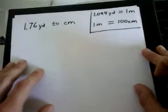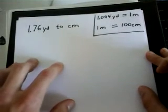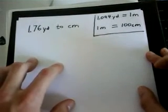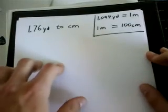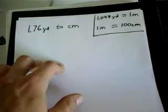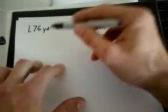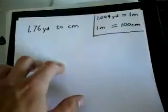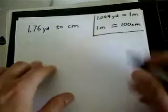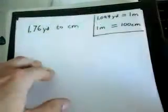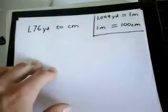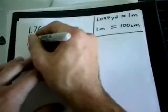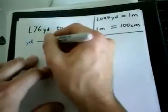Okay, so in this example we have 1.76 yards and we want to convert that to centimeters. Now, when they give you tables with common conversion factors, one of the common conversion factors is definitely not going to be from yards to centimeters. So we can't go directly from yards to centimeters, but we can go, the idea is that maybe there's something in the middle that we can go to.